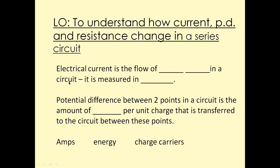Have a look at these two statements — we're going to fill in the blanks using the keywords at the bottom of the slide. Electrical current is the flow of charge carriers — those charge carriers could be electrons or ions — and electric current is measured in amperes, or amps for short. The potential difference, which is the same as voltage, is the amount of energy per unit charge that is transferred to the circuit between different points.